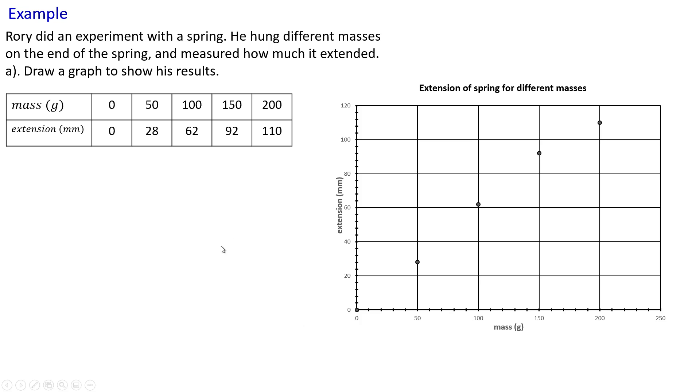Okay, now you've sketched it. Let's plot the points then. First one, zero zero, which we're going to plot there. And the second one, mass is 50 and the extension extends the spring by 28, which is there. Next one is 100 and 62, so our mass is 100 up to 62 there.